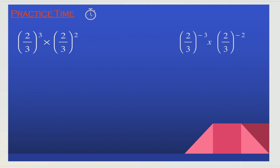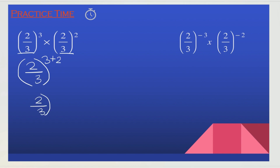Time to practice. Here, since the bases are the same, we can use the product rule. So we can say 2 over 3, whole to the exponent of 3 plus 2. And we know that 3 plus 2 equals 5, so the answer is going to be 2 over 3 to the exponent of 5. This 5 is going to apply to the numerator and the denominator, so it's going to equal 2 to the exponent of 5 over 3 to the exponent of 5. And that is our answer.